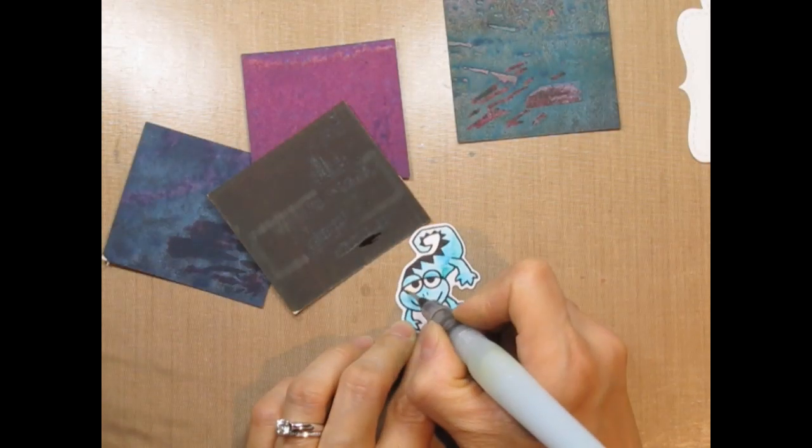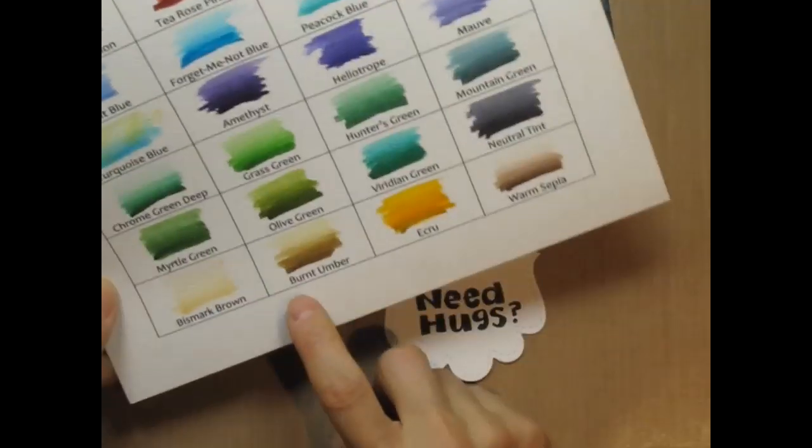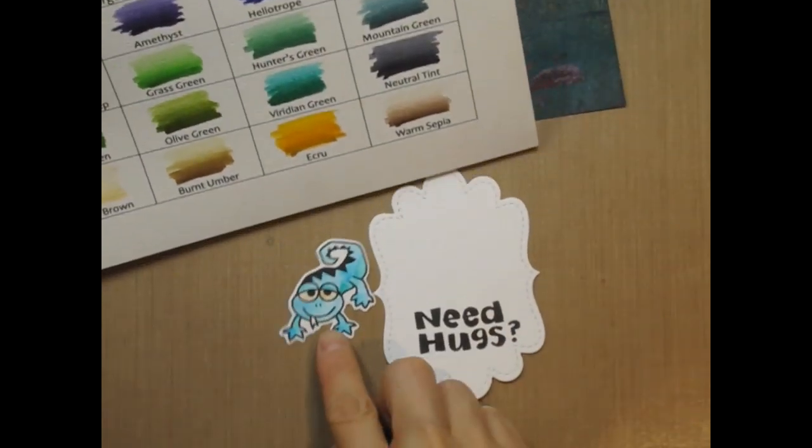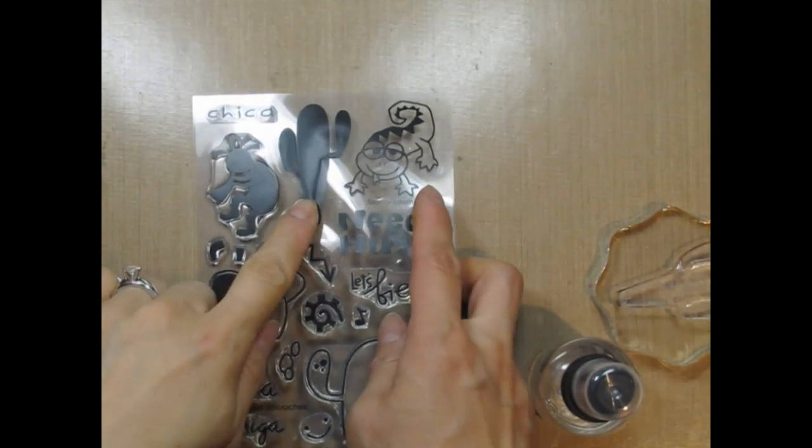Initially I use Bismarck Brown for the eyes, but I decide later that it's not bright enough. Next I decide on Burnt Umber and Icaru for the ground, but I need to stamp the cacti first.